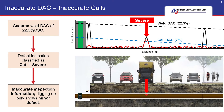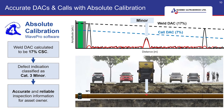This misclassification of the defect severity could alarm the asset owner unnecessarily and cause them to urgently dig up the pipe only to reveal a minor defect. Now, with absolute calibration, the weld deck would have been measured and accurately set to 17% cross-sectional area change, for example, in this case. And this means that the indication is correctly classified as a cat-3 minor defect. Consequently, the asset owner would have more accurate and reliable inspection information to make an informed decision about the asset.